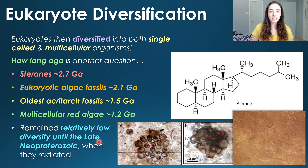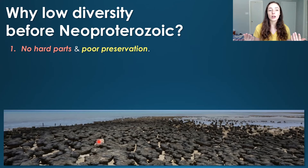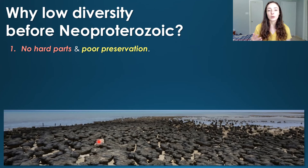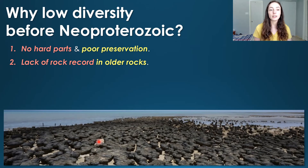What explains the low diversity before the Neoproterozoic and high diversity during and after? For the low diversity: first, no hard parts meant poor preservation — it might seem like there was less diversity because there was less preservation. Additionally, there's a lack of rock record; not only was there poor preservation because organisms hadn't evolved skeletons and shells yet, but also because the rock record diminishes the further back you go.